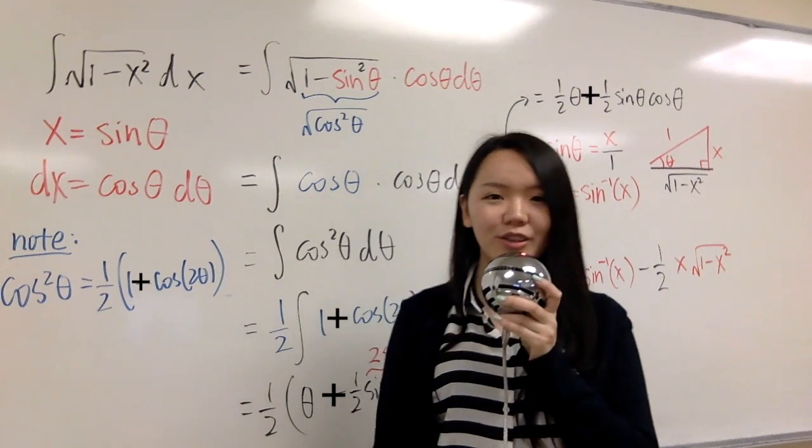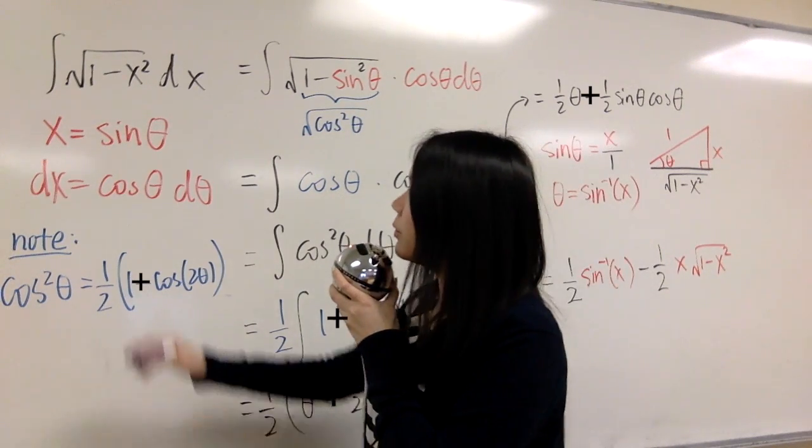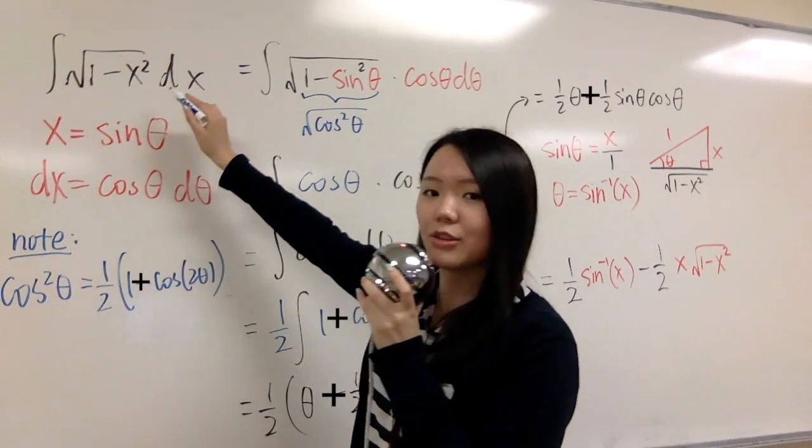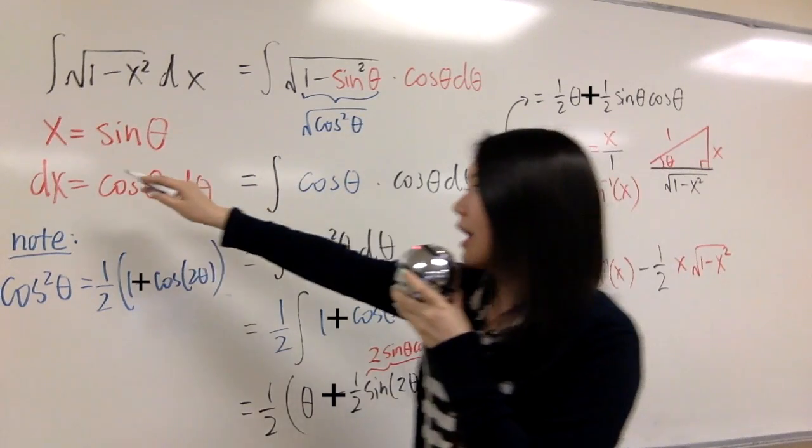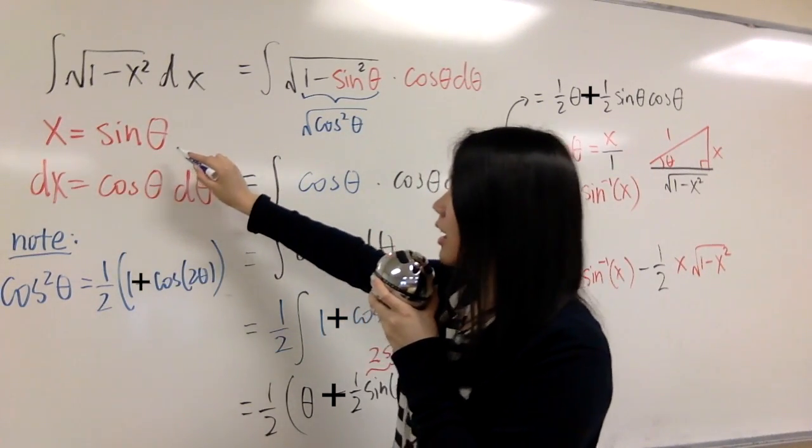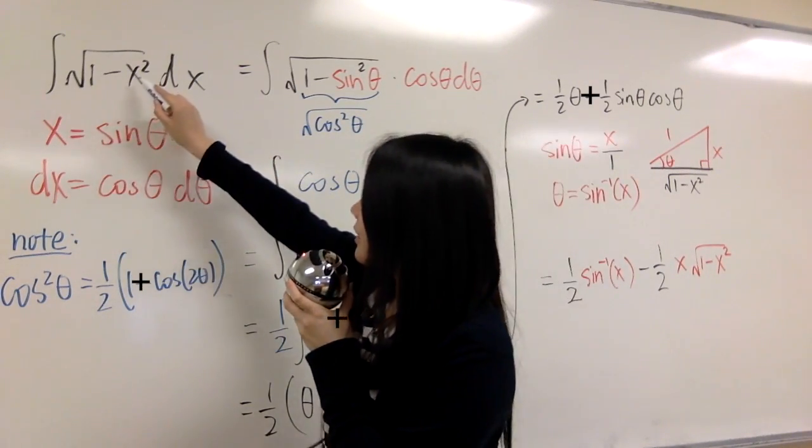Hi everyone, I'm Joy. Today I want to show you how to integrate square root of 1 minus x squared. First, we set x equals to sine theta, so we put x inside here.